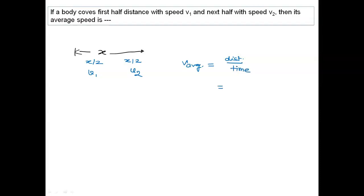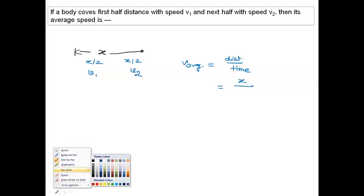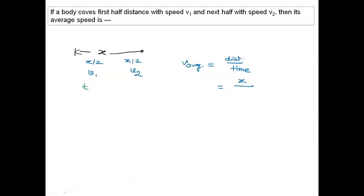I hope distance is very much clear to you, total distance is x. Now I have to calculate the total time for this journey. Time is given by distance upon speed, so x upon 2 upon v1.